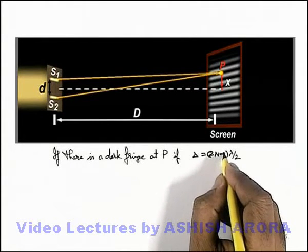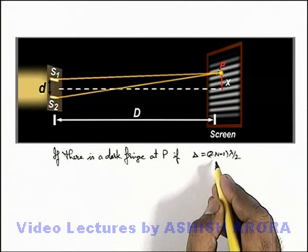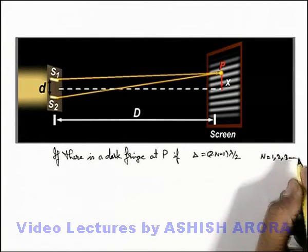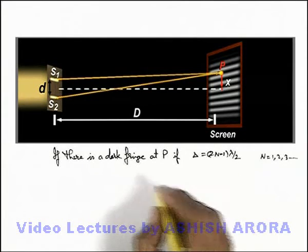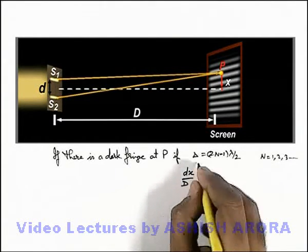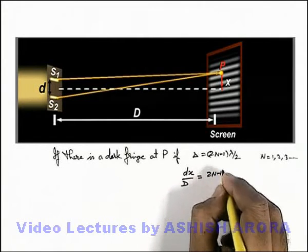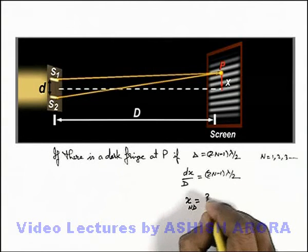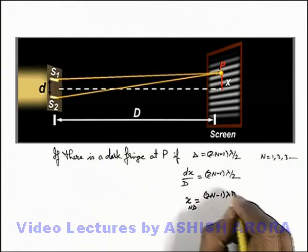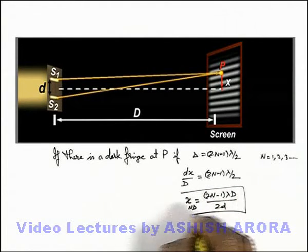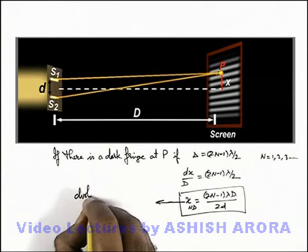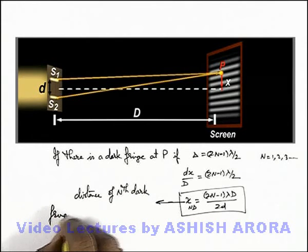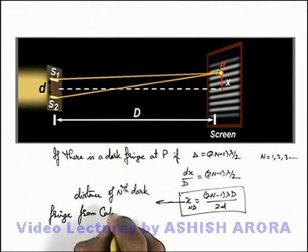I have taken (2n−1) because I cannot use n equal to zero, since at the center it is a maxima, not a minima. Here I can take the value of n equal to 1, 2, 3, and so on for various dark fringes counted from the center. So dx/D at a distance x from center equals (2n−1)λ/2, and the value of x — the distance of the nth dark fringe from the center — is (2n−1)λD/2d. This is the distance of the nth dark fringe from the central maxima.